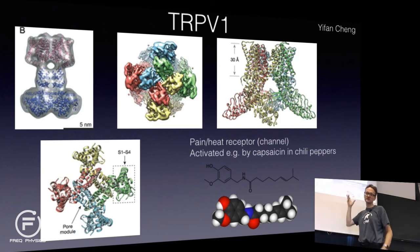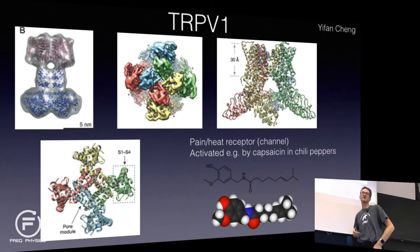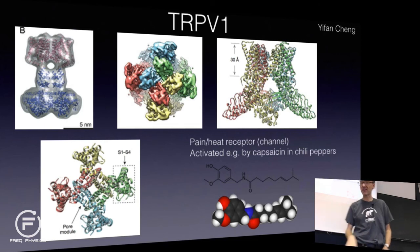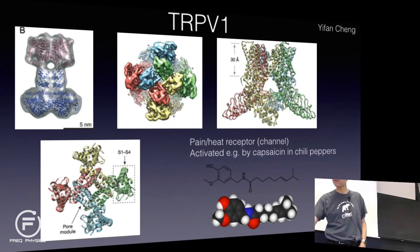There are hundreds of structures like this. Virtually every issue of Nature now has one or two high-impact papers with a new structure determined by cryo-electron microscopy.